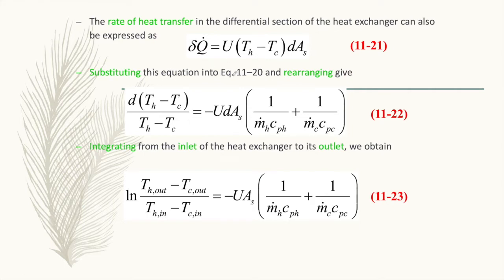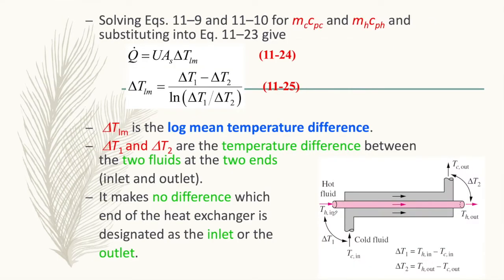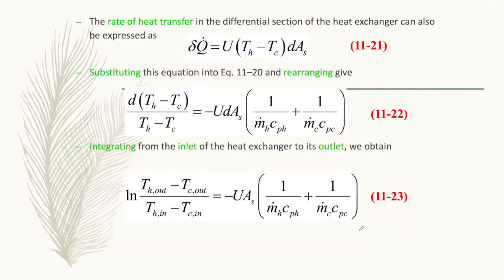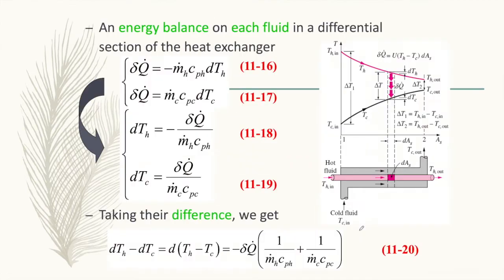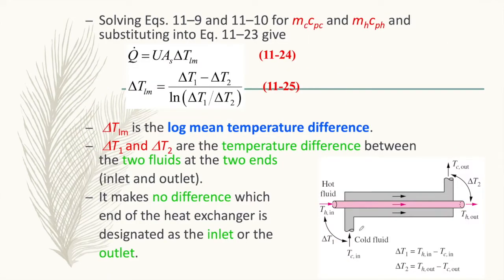Substituting this equation into equation 11-20, we get a combined equation. After integrating, we obtain: ln[(T_H,out minus T_C,out) over (T_H,in minus T_C,in)] equals negative U·A_s times (1 over m-dot·C_p,H plus 1 over m-dot·C_p,C). Solving equations 11-9 and 11-10, we arrive at: Q-dot equals U·A_s·delta_T_lm, where delta_T_lm equals (delta_T1 minus delta_T2) over ln(delta_T1 over delta_T2).